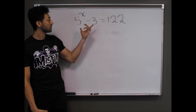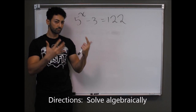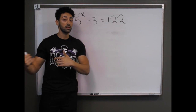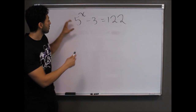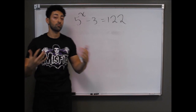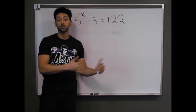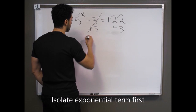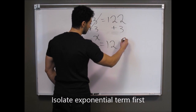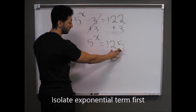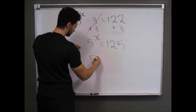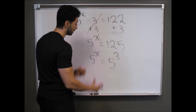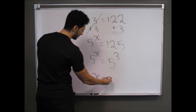For this third example, unlike the previous two, the term with the variable as the exponent is not isolated. When it's not isolated, your first step is to isolate it before getting to a common base. Here I'll add 3 to both sides to get 5 to the x equals 125. Now I rewrite 125 with a base of 5 — 5 to the third power equals 125 — and with a common base I pull out the exponents to get x equals 3.